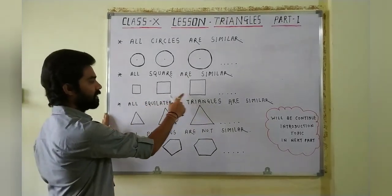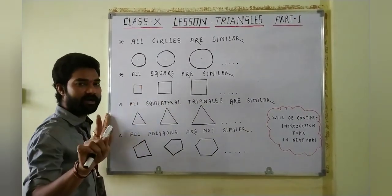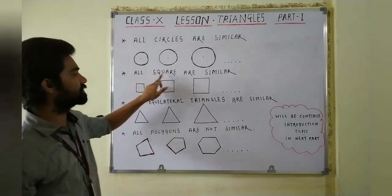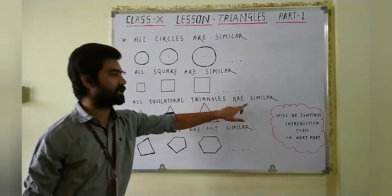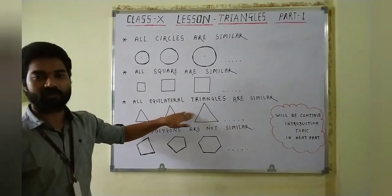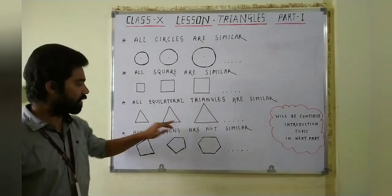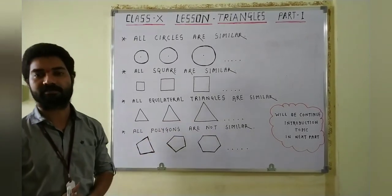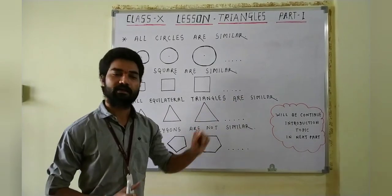The third point is: all equilateral triangles are similar. See the given triangles — first, second, third. All these triangles have the same shape but different side lengths. That's why all equilateral triangles are similar.